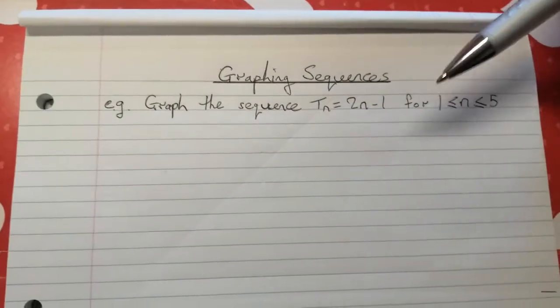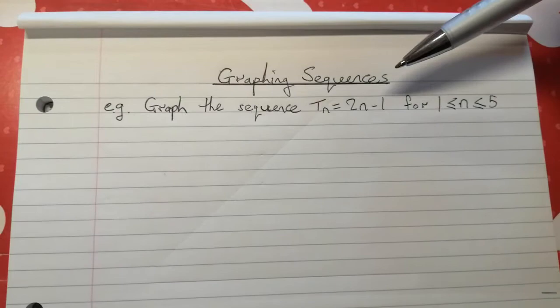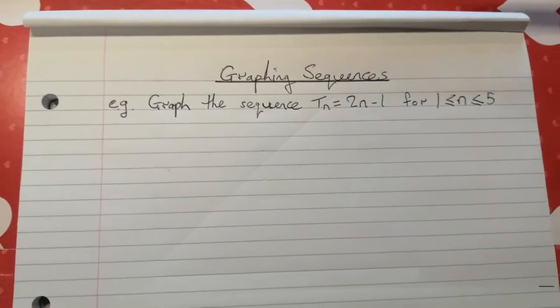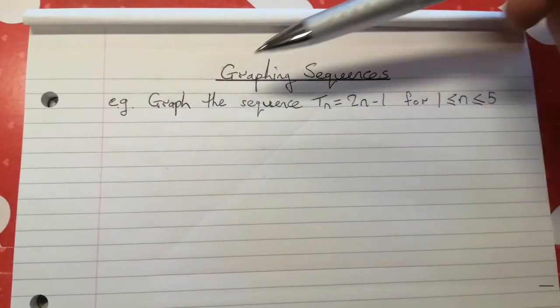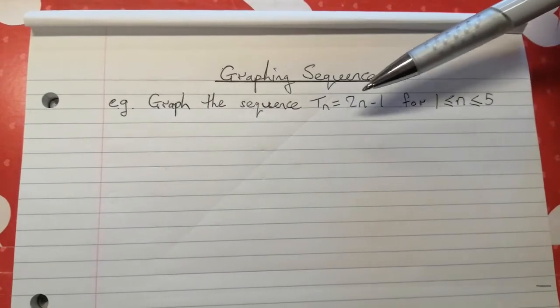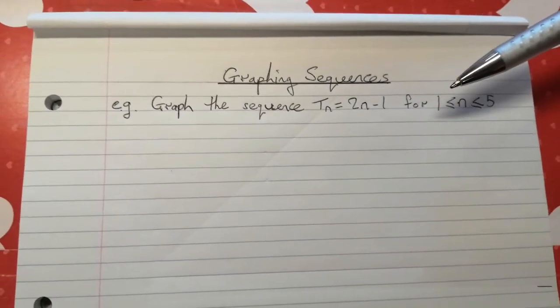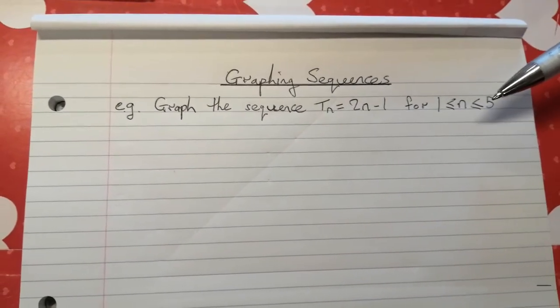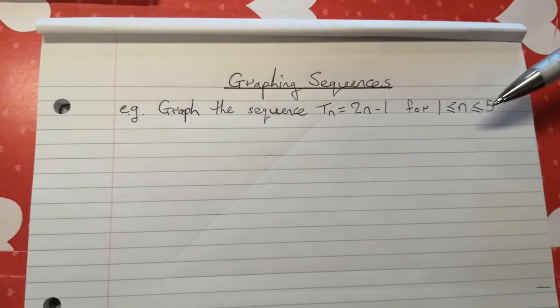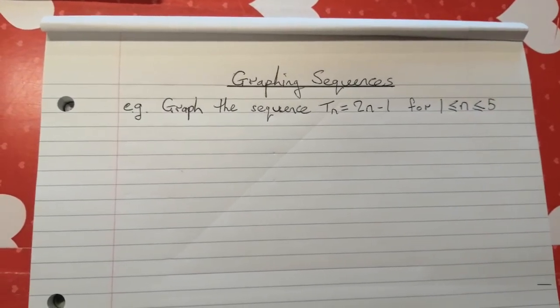Okay, hi all. For today's lesson we're going to talk about graphing sequences, number sequences. And we're going to start with an example which is to graph the number sequence Tn = 2n - 1 for n between 1 and 5. So just the first five terms: term 1, term 2, term 3, term 4, and term 5.